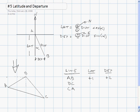BC, the latitude is negative 2, and the departure is positive 2.